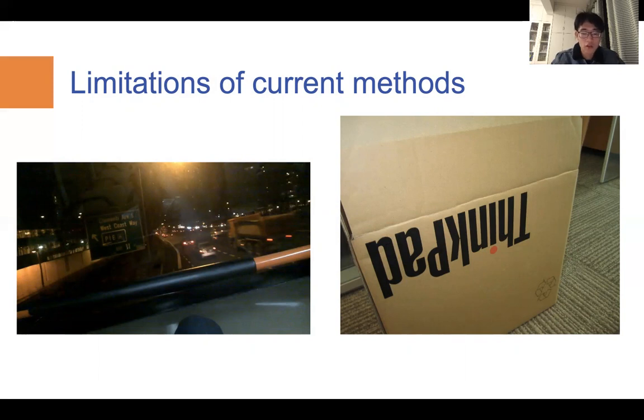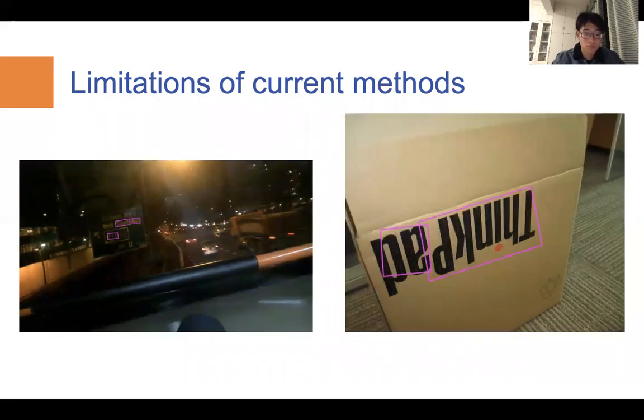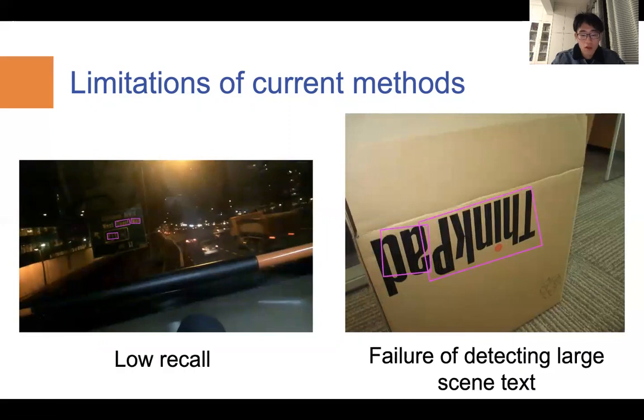On the one hand, some predictions of the current model suffered from the low recall problem. For example, as shown on the left, some scene text on this traffic board are failed to be detected.